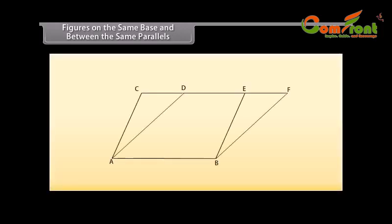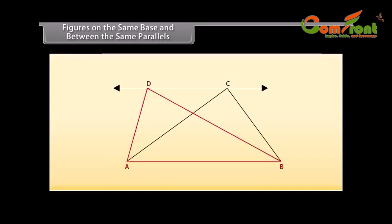Figures on the same base and between the same parallels. Now, look at this figure. We can see that parallelogram ABEC and the parallelogram ABFD are on the same base, AB. Also, the vertices C, E of the parallelogram ABEC opposite to AB, and vertices D and F of the parallelogram ABFD opposite to AB, lie on the same line CF, which is opposite to AB. So, we can say that both the parallelograms lie on the same base AB and between the same parallels AB and CF. Similarly, triangles ADB and ACB both lie on the same base AB and between the same parallels AB and DC.